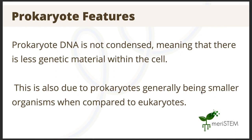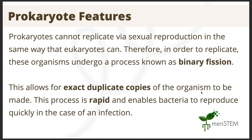Similar to some eukaryotes, as prokaryotes cannot sexually reproduce, they use another mechanism to replicate, known as binary fission. Binary fission allows prokaryotic organisms to produce exact duplicate copies of themselves. As the process is not very complex and no genetic variability occurs, these cells replicate extremely quickly.